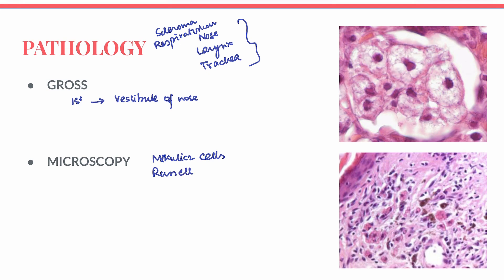Mikulicz cells are large foam cells with a central nucleus and a vacuolated cytoplasm containing the causative bacillus, Klebsiella rhinoscleromatis. You can see the vacuolated cytoplasm all around and the central nucleus — these foam cells containing Klebsiella rhinoscleromatis are known as Mikulicz cells.